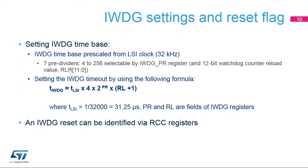The IWDG timebase is pre-scaled from the LSI clock at 32 kHz. The IWDG PR prescaler register can divide the LSI clock frequency by 4 up to 256. The watchdog counter reload value is a 12-bit value written in the IWDG RLR register. A formula can be used to determine the independent watchdog timeout. The independent watchdog time is based on the LSI period and its prescaler, as well as the selected watchdog counter reload value. Note that the reset and clock controller, or RCC, of the product provides registers giving the source of the reset. In that way, the application can check if a reset is caused by an independent watchdog.